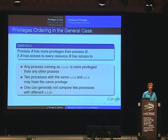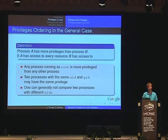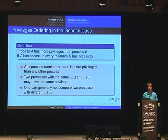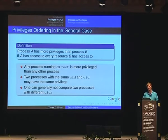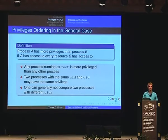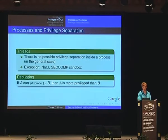Privilege ordering can be important but is usually hard to define. We define it by saying process A is more privileged than process B if A has access to every resource B has access to. From this definition, any process running as root is more privileged than any other process because it can do everything on the system. Two processes with the same UID and GID may have the same privilege, but one generally cannot compare two processes with different UIDs, since they typically have access to different sets of resources, such as different files.